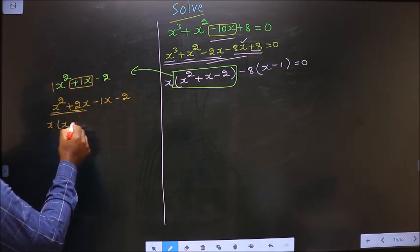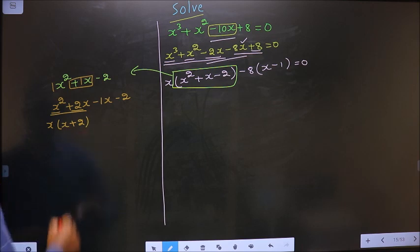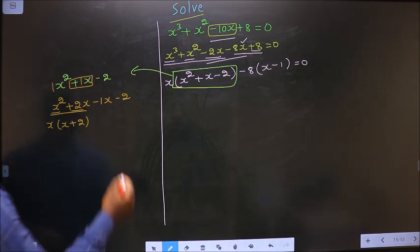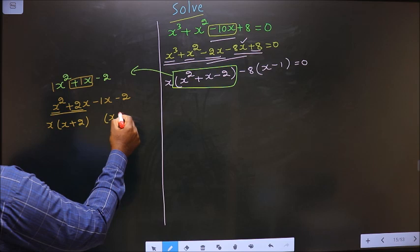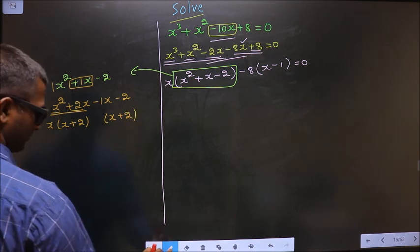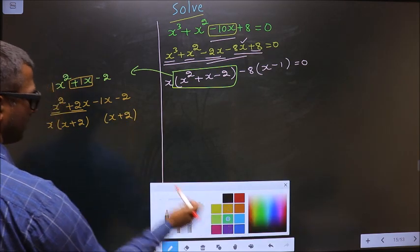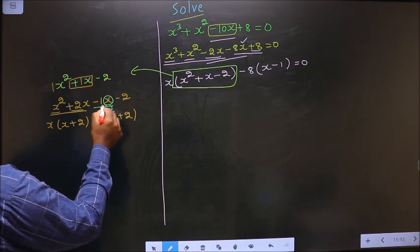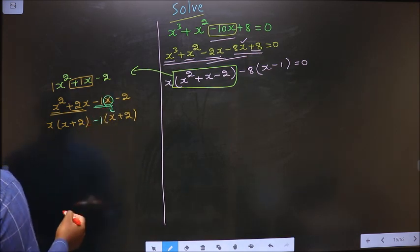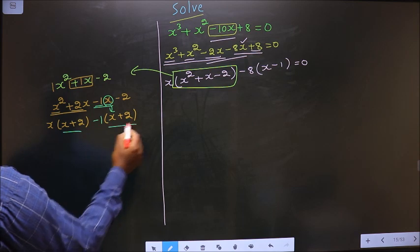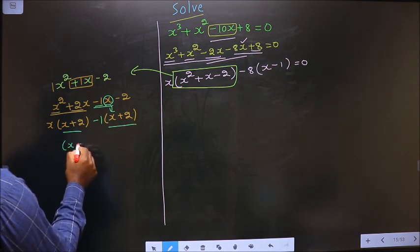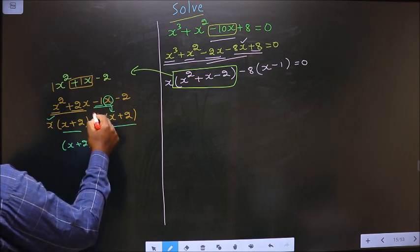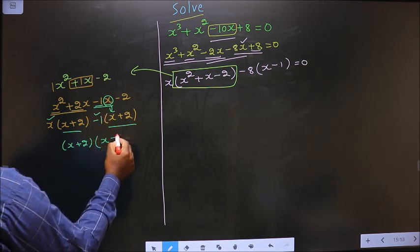Minus 2. Now what can you take out common from the first two terms is x, so here you get x and here you get plus 2. Whatever you have got here, here also you should get the same thing. Now from this, x has gone inside so outside you are left with minus 1. Now you take out x plus 2 common, so here you have x and here you have minus 1.